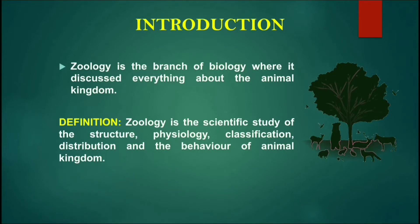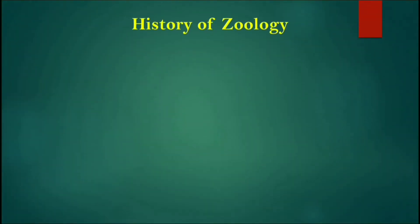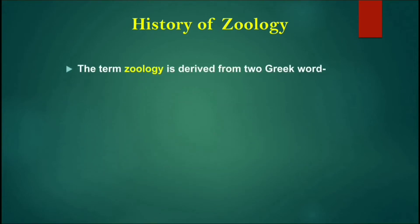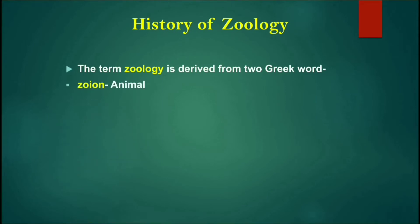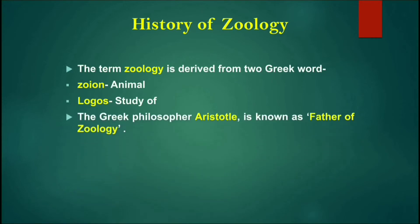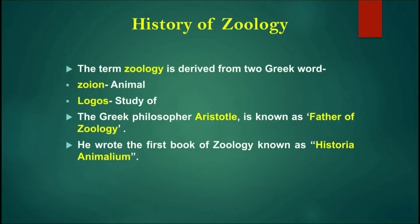Now let's know about the History of Zoology. The term Zoology is derived from two Greek words: first is 'Zoolion', which means animals, and second is 'Logos', which means study of. So Zoology means study of animals. The Greek philosopher Aristotle is known as the father of Zoology, as he wrote the first book of Zoology known as Historia Animalium, or History of Animals.